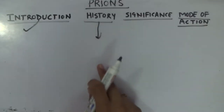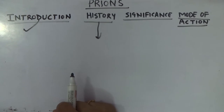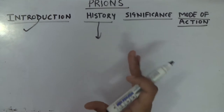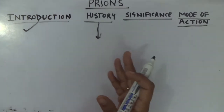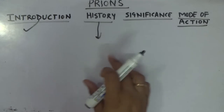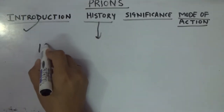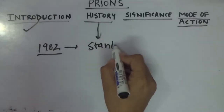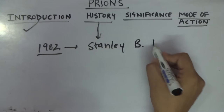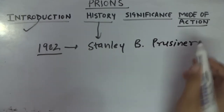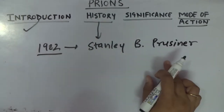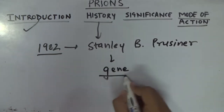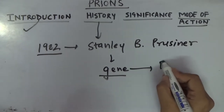Now moving to the history part. In history we should know who the researcher was and in which year prions were discovered. In 1982, there was a scientist named Stanley B. Prusiner, who first of all identified a gene — a gene coding for a protein.